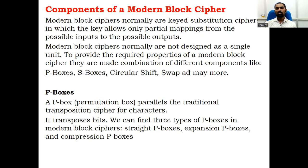So let us see one by one all the components of the block cipher. Let us start with the first component — the P-box. We call this P-box a permutation box. This permutation box is almost parallel to the traditional transposition cipher. Transposition cipher does not change the data value — it rearranges the bits. It transposes bits.